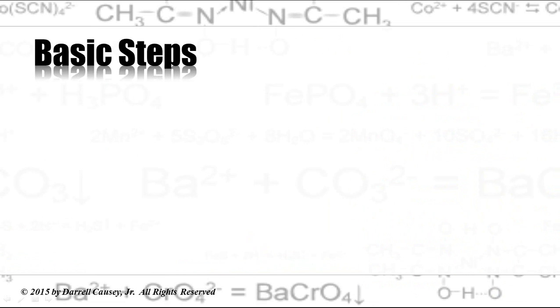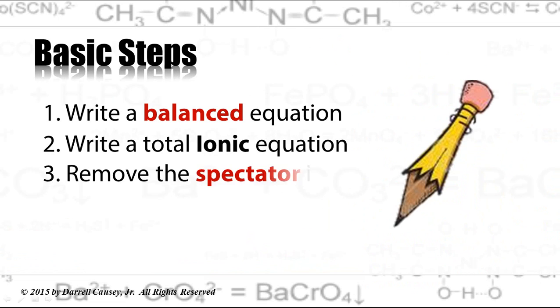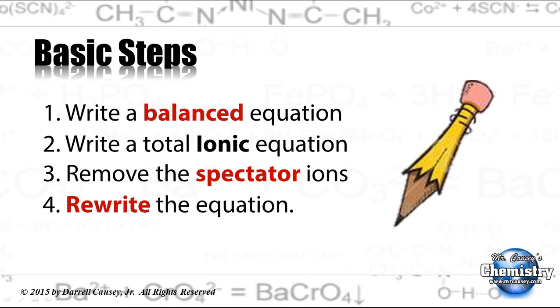All right, the basic steps. One, write a balanced equation. Two, write a total ionic equation. Then remove the spectator ions and rewrite the equation. And that will be your net ionic equation.